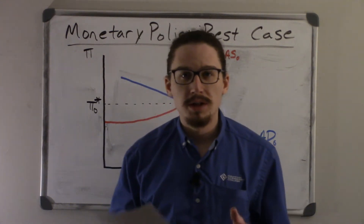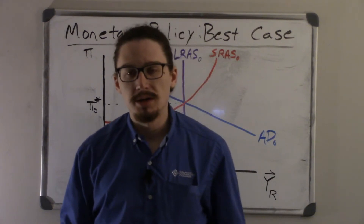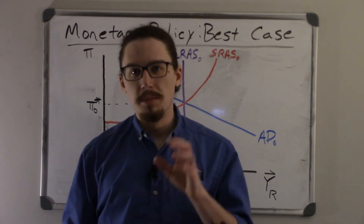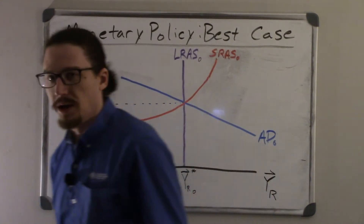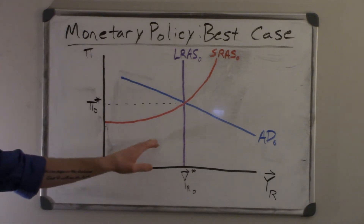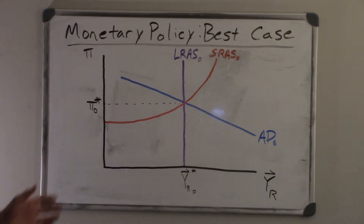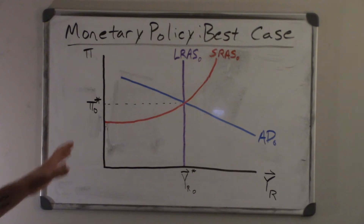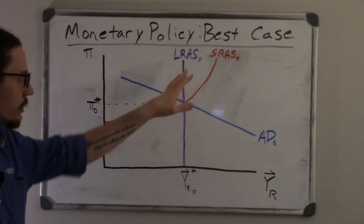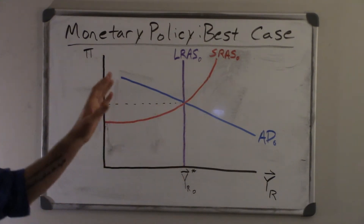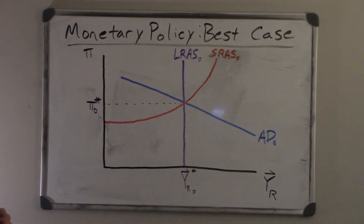In this video, we're going to continue talking about monetary policy. Specifically, we're going to be talking about the best case for monetary policy. I've already drawn up the starting place for our model. This is our long-run equilibrium for our aggregate supply-aggregate demand model — the model of our macro economy. Our long-run equilibrium is where all three curves meet: the aggregate demand, short-run aggregate supply, and the long-run aggregate supply.